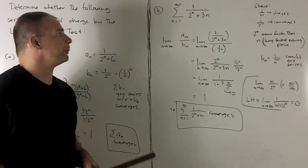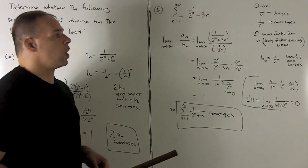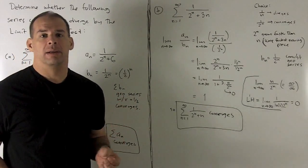Let's try another one. I'm going to take n going from 1 to infinity, sum of 1 over 2 to the n plus 3 n.